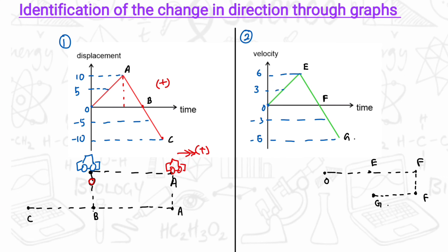At point A, the curve reaches its peak, and after that, the displacement gradually decreases. Displacement is always measured from the initial position, so the displacement keeps decreasing with time, meaning the object is coming back to its initial position. At B, the object is at its initial position, and after B, the displacement is negative — the object passes the initial position and goes back to C.